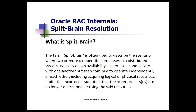This is what split-brain is: a scenario where two or more operating processes in a distributed system like a cluster have loose connectivity with one another and cannot continue to operate independently. In a cluster environment, you cannot have two systems operating without synchronization, so in this situation one has to be evicted.